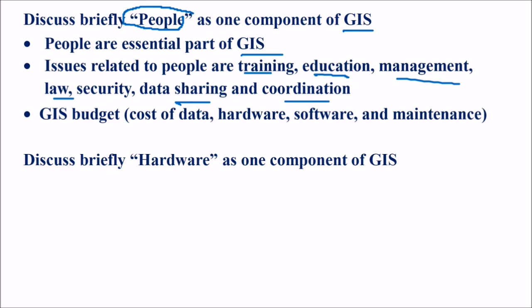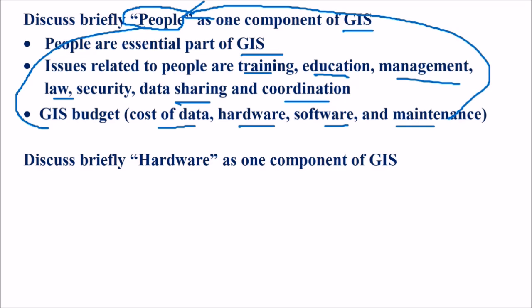Along with this, people are also included in the GIS budget, which includes the cost of data, hardware, software, and maintenance. For all of these, people are always involved.